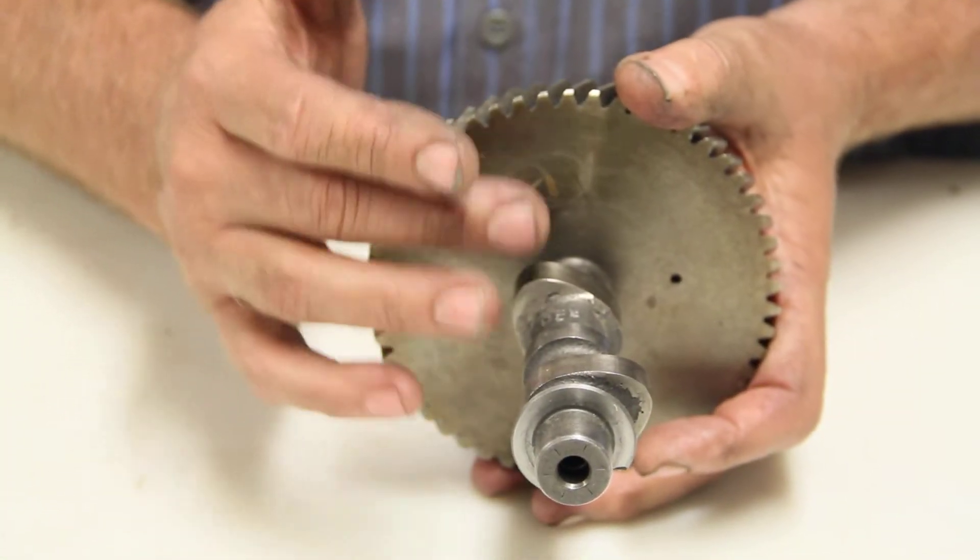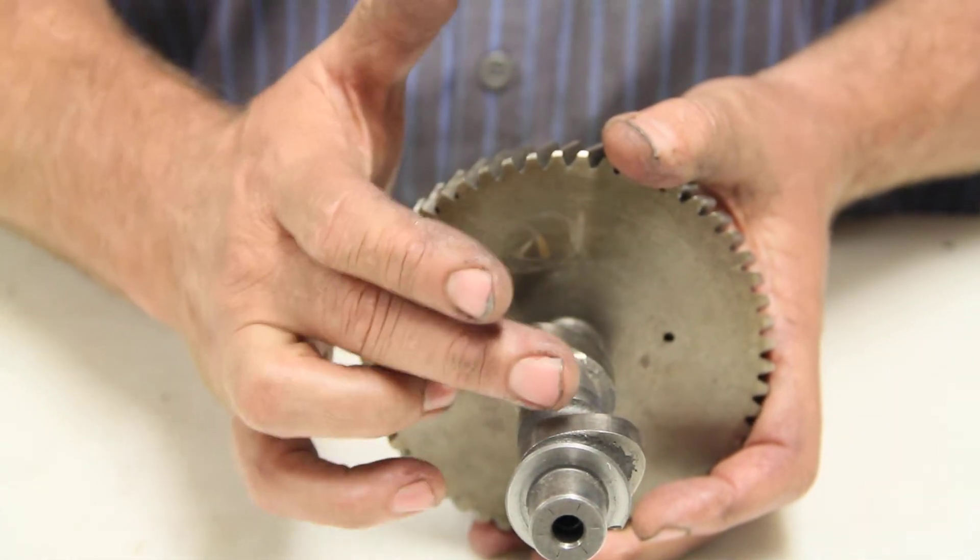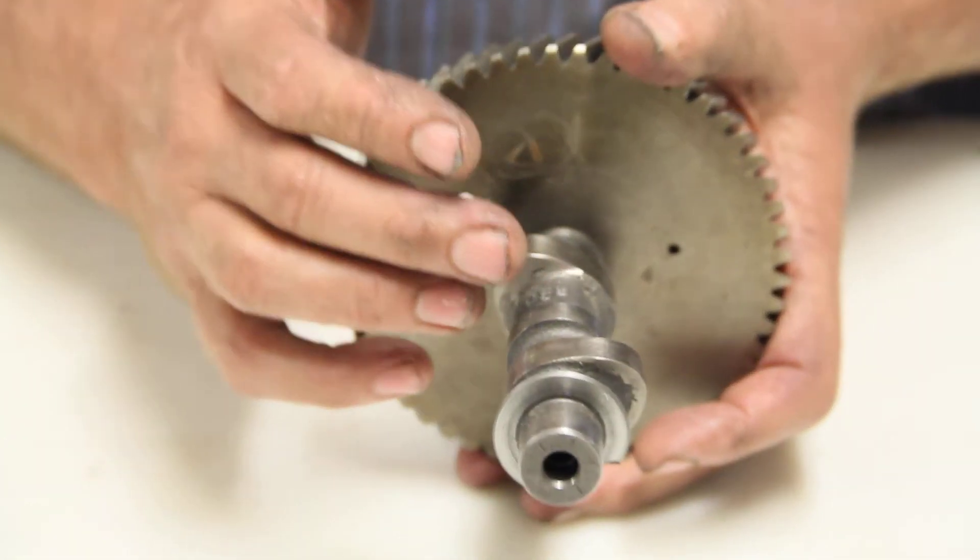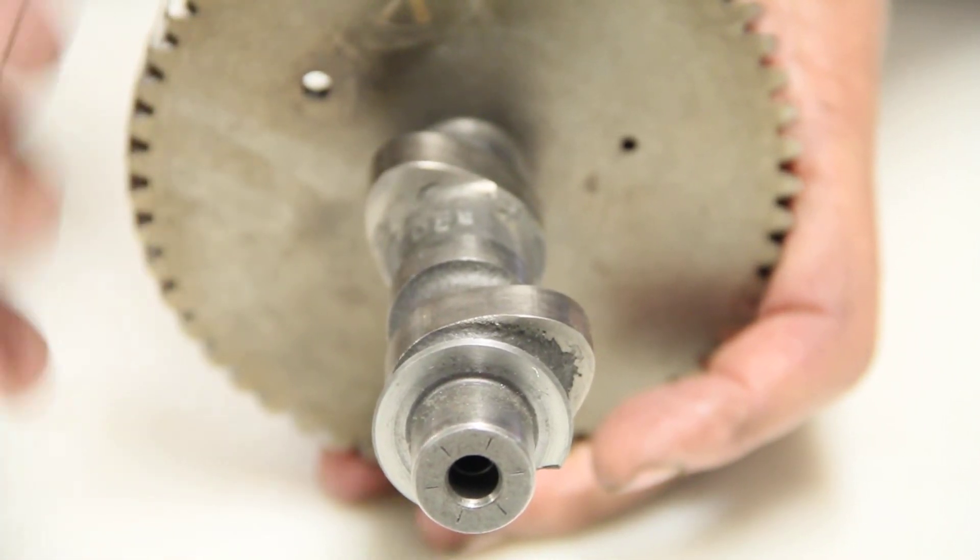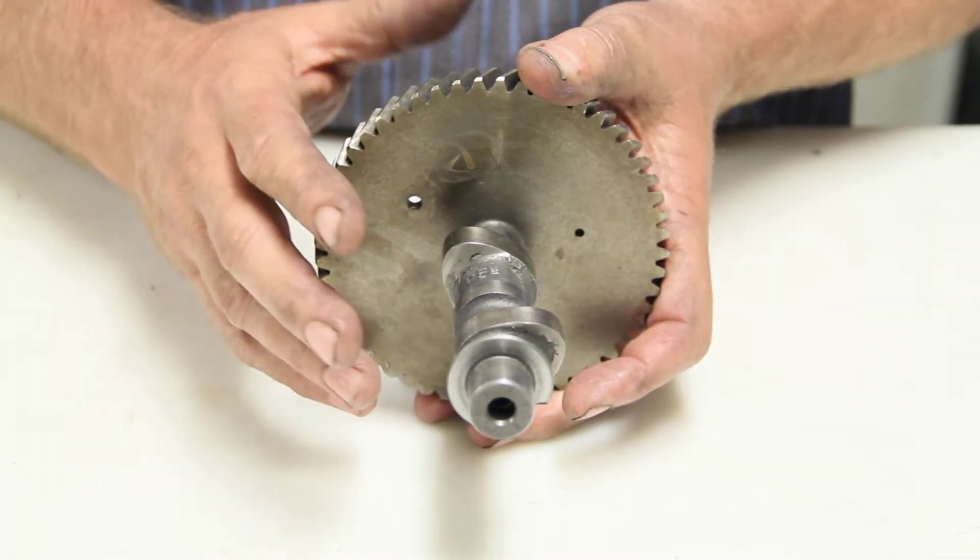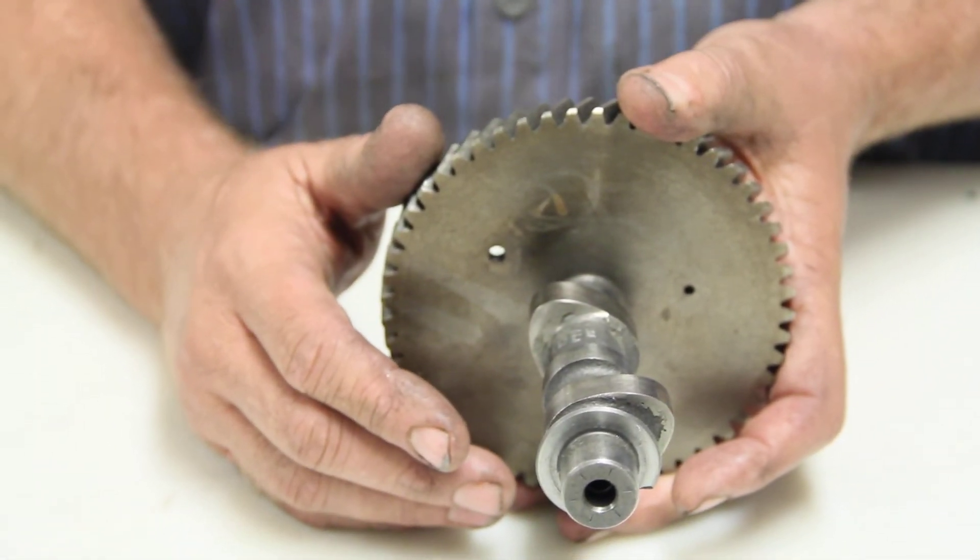The only time it comes out a little different is if you have different duration on the intake versus the exhaust - then it might vary a little bit, but you'll still end up on the same tooth. When you put your adjustable cam gear on with a degree wheel, you can adjust your cam gear and it'll be within a few degrees of being right.